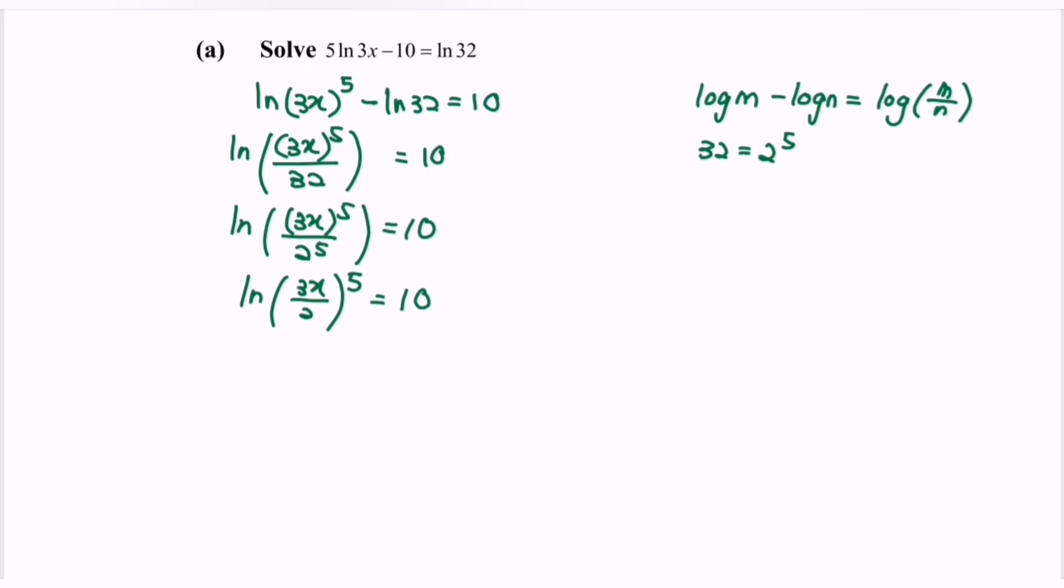Rewriting in exponential form: (3x/2)^5 = e^10.